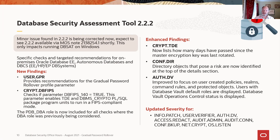We announced Database Security Assessment Tool version 2.2.2 last month, but after announcing it, we had a couple of complaints about issues running the tool for databases on Microsoft Windows. So we pulled the download offline and we've corrected the problem with the Windows port of the Database Security Assessment Tool. We are putting it back online now. If you downloaded 2.2.2 before we pulled it off and you are running it on Linux or Unix, there's no problem — no changes to that. If you are running your Oracle databases on Windows, we recommend you go back to My Oracle Support and download DBSAT again to get the latest update.